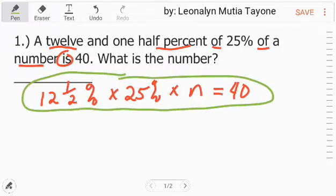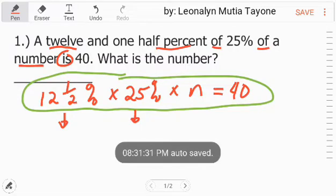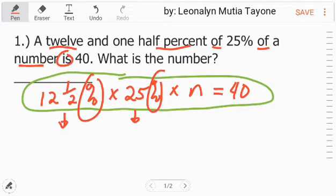First, let's convert into decimal all the percentage numbers or those with percentage signs. To convert into decimal or to remove these percentage signs, we divide by 100 percent. We always divide by 100 percent.